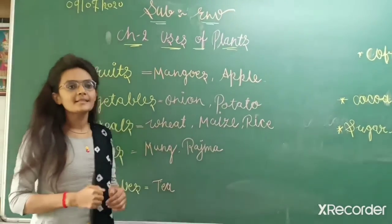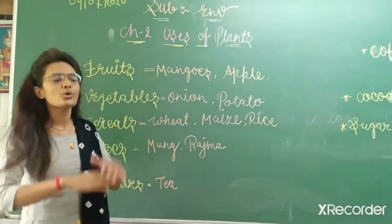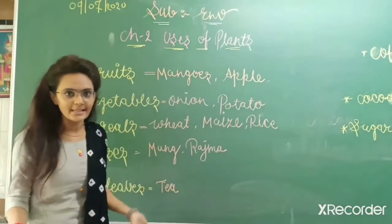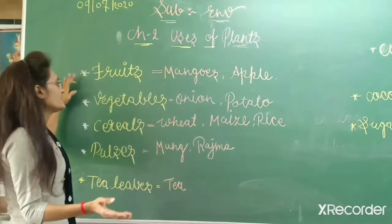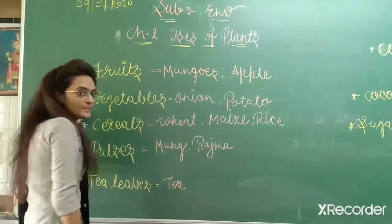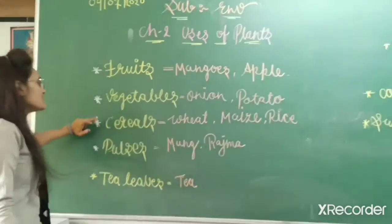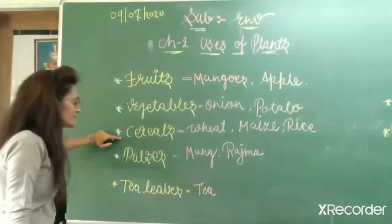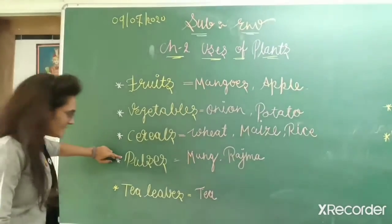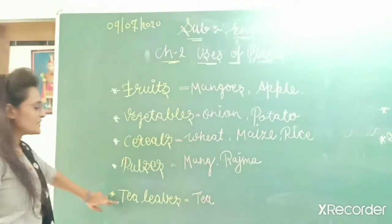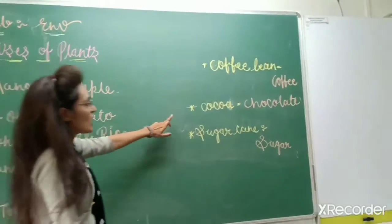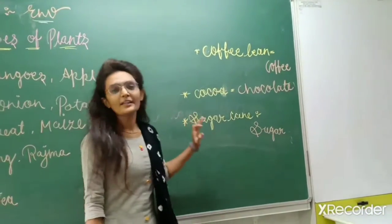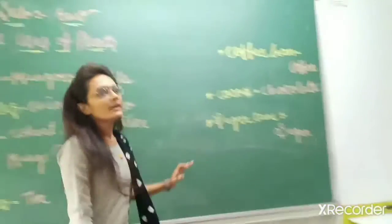Plants give to us so many things, like fruits, vegetables, cereals, pulses, tea, coffee, chocolate and sugar.